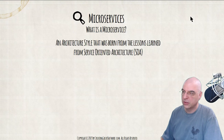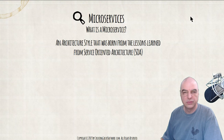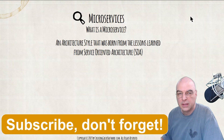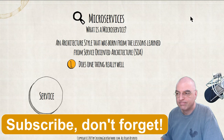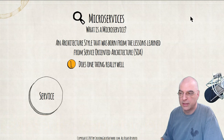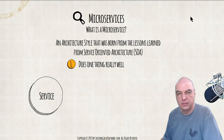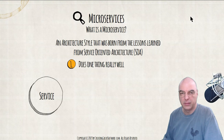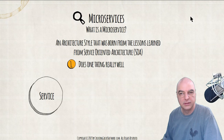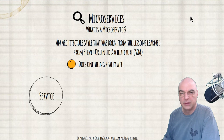What is a microservice? It's an architecture style that was born from the lessons learned from service-oriented architecture. In general, a microservice does one thing really, really well. Keep in mind that a microservice is a small piece of a larger system that does one thing really well.